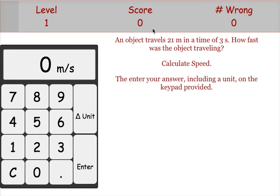When you hit the begin button, you will be presented with a question. An object travels 21 meters in 3 seconds. How fast was it traveling? 7 meters per second.